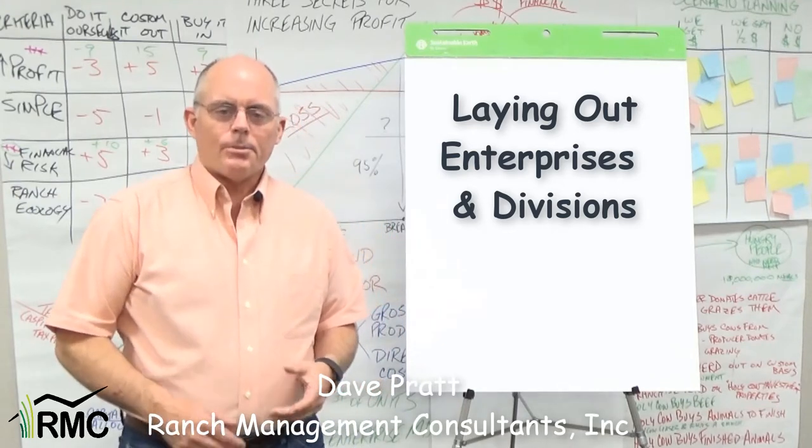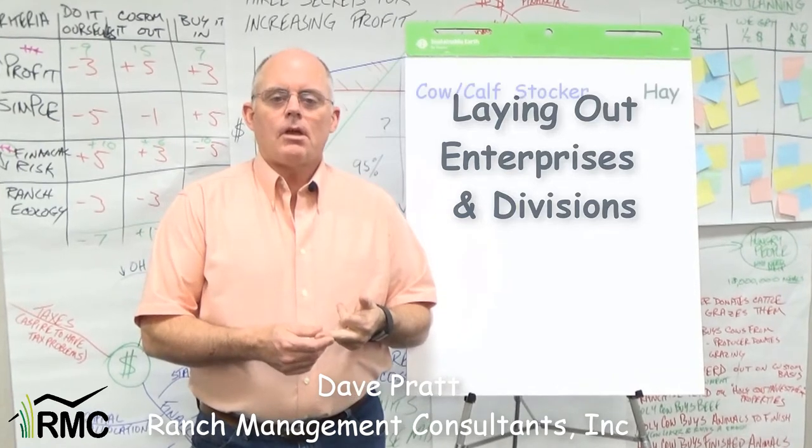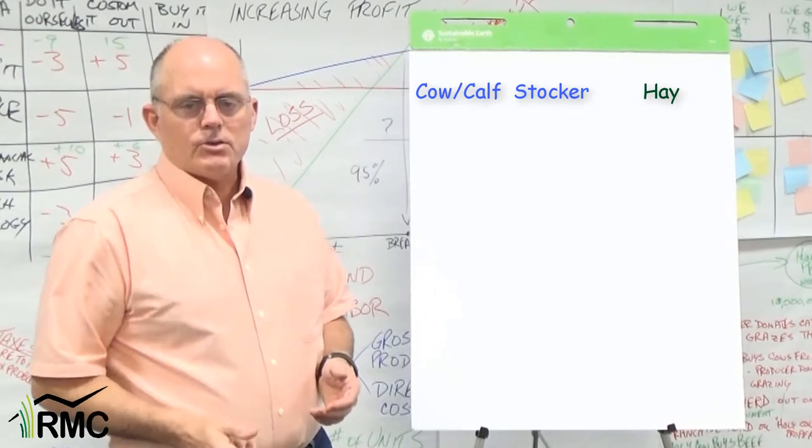Imagine a ranch with three enterprises: cow-calf, stocker, and a hay enterprise. How would you lay out the accounts and allocate costs to evaluate the profitability of the different parts of this business?